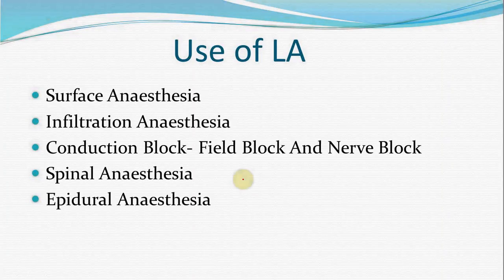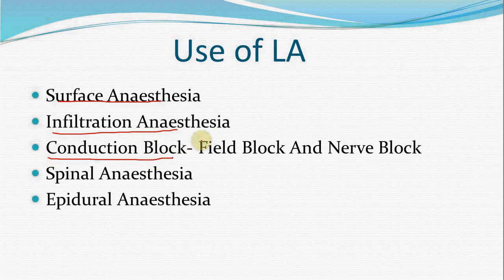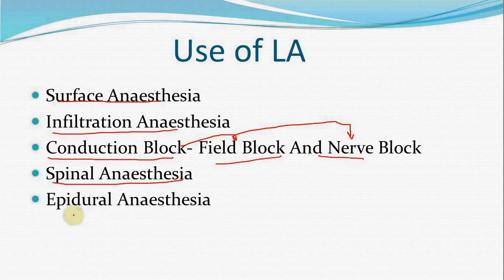Types of local anesthesia administration: surface anesthesia, infiltration anesthesia, conduction block — which is of two types: field block and nerve block — spinal anesthesia, and epidural anesthesia.